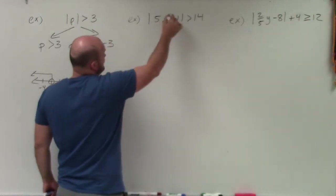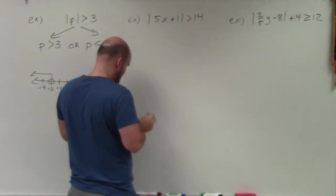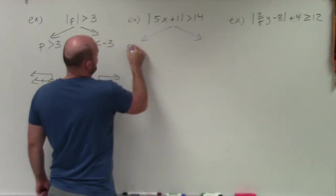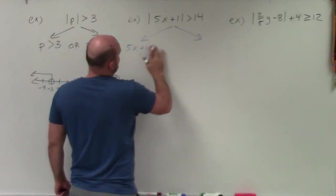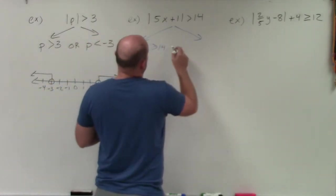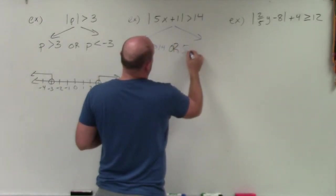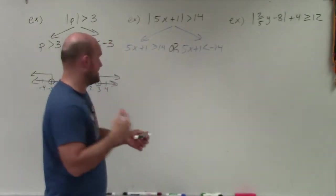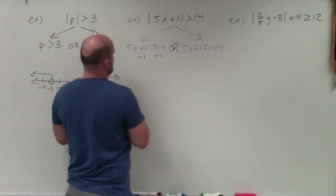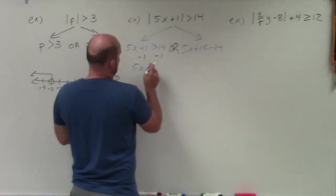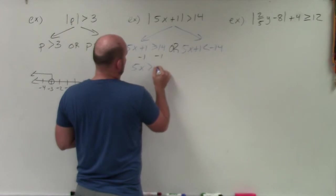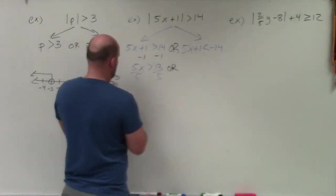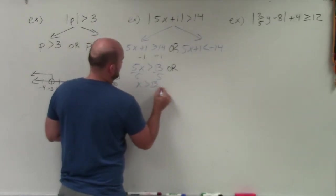This one is isolated. I have the absolute value of 5x plus 1 is greater than 14. So I'm going to create my two cases: 5x plus 1 is greater than 14, or 5x plus 1 is less than negative 14 — negate, flip the sign. Now let's use inverse operations. I subtract 1 on both sides: 5x is greater than 13. Then divide by 5: x is greater than 13 fifths.